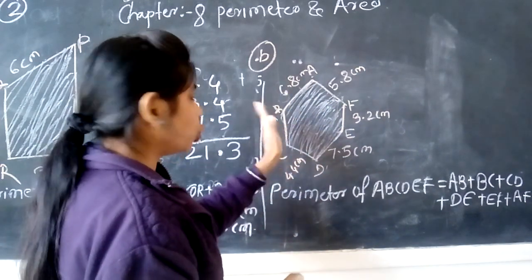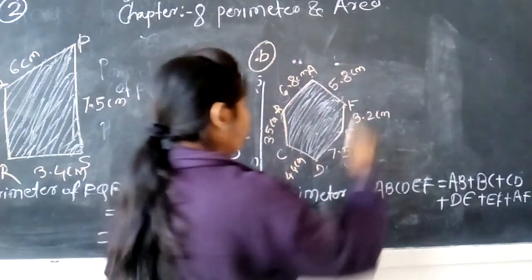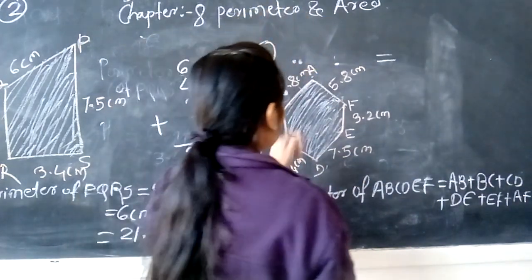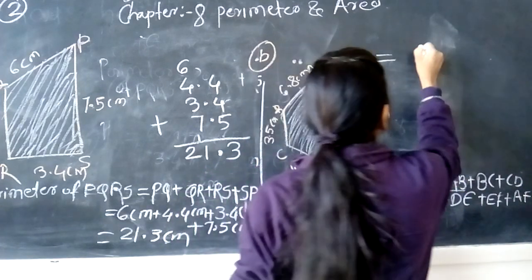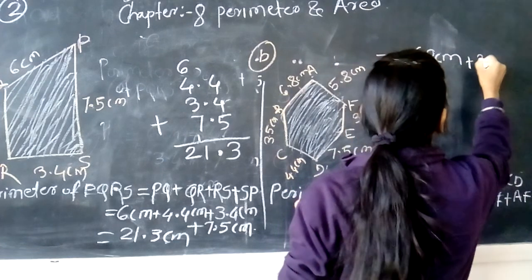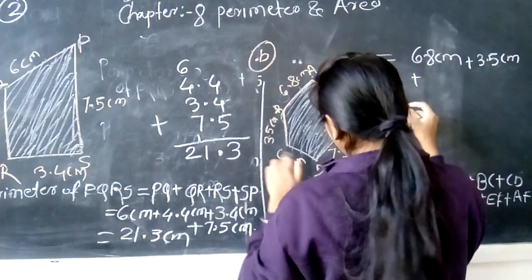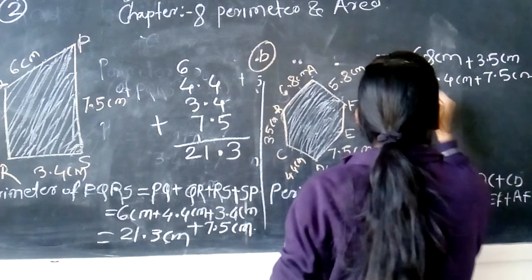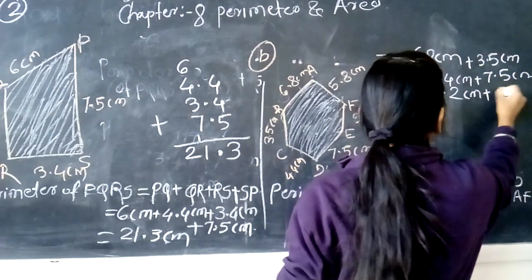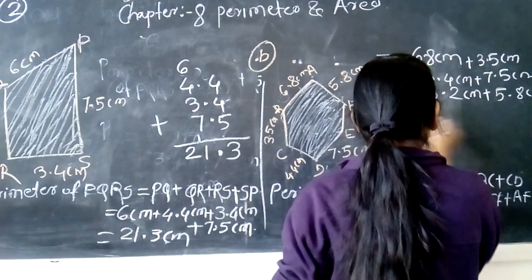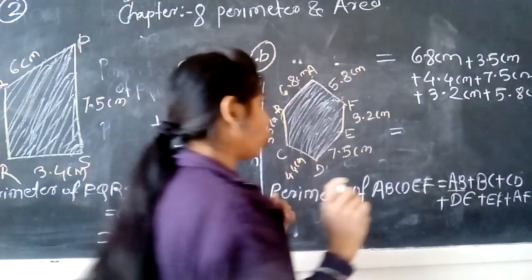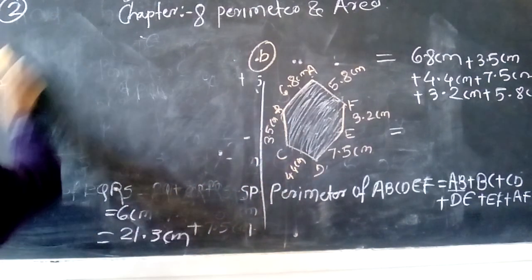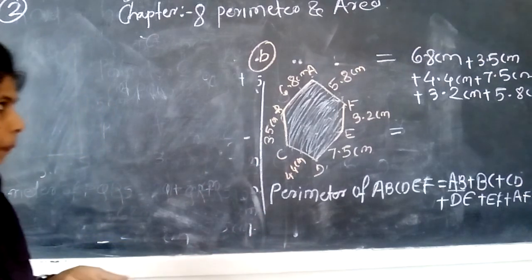Okay, we can write the dimensions for each side. So we will put the values here. The dimensions are every side of the pentagon: 6.8 cm plus 3.5 cm plus 4.4 cm plus 7.5 cm plus 9.2 cm.